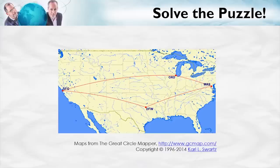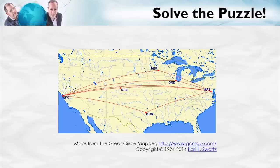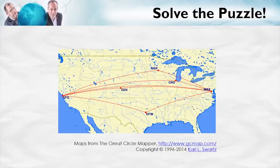Now think about someone flying from Washington to San Francisco. They have lots of options — they could fly through Chicago, Denver, Minneapolis–St. Paul, or fly direct. There are many more good options since San Francisco isn't a hub city. So the demand for the Washington-to-San Francisco flight is relatively elastic, and the demand for the Washington-to-Dallas flight is relatively inelastic. Our theory tells us that with elastic demand we get a low markup, and with inelastic demand we get a high markup. The theory is completely consistent with this pricing puzzle and explains it. If you want to test yourself, click practice questions, or click next video to move on.